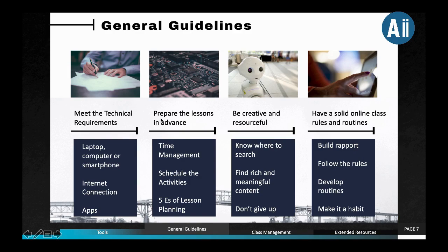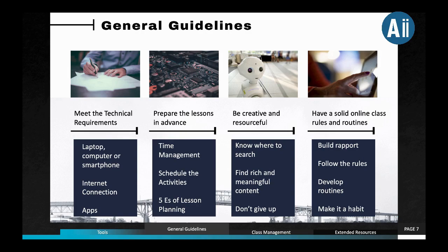Now let's move on to the general guidelines on how to make our online teaching and learning successful. The first one is to meet the technical requirements. Basic technical requirements are as follows: you need to have a laptop or computer. If both are not available, then we can settle with a smartphone, but there are some limitations with the use of a smartphone as some features are not yet available. So we encourage you to make use of a laptop or a computer. It is important to have a stable internet connection. Just be patient with it. And download the apps whenever necessary — for example, if you will be using Google Classroom, it's better to have the application on your phone.